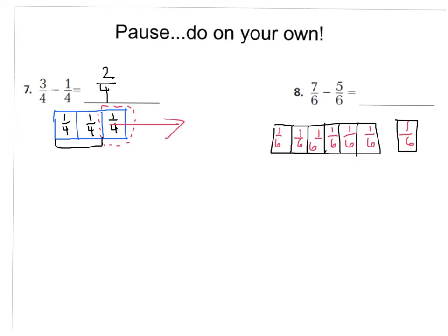Now I can subtract five-sixths from seven-sixths. I'm going to make x's over five-sixths: one-sixth, two-sixths, three-sixths, four-sixths, five-sixths. According to my model, seven-sixths minus five-sixths leaves two-sixths. And of course, by checking it, you keep your denominator the same and just subtract the numerator.